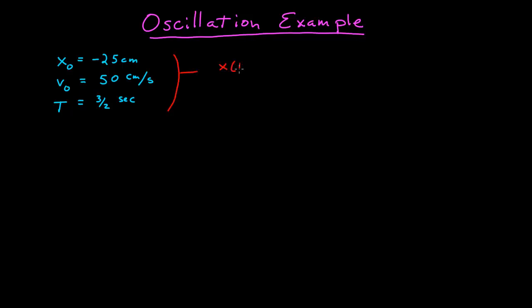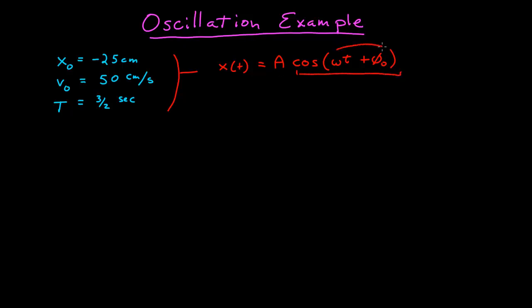I want to find what is the expression that describes this oscillatory motion — the position function of time, given in the form where the position is some amplitude times a trig function, cosine of some phase, given by omega t plus phi naught.